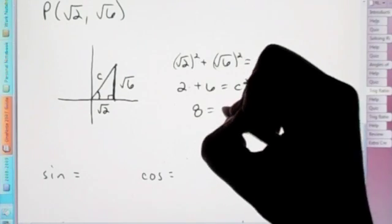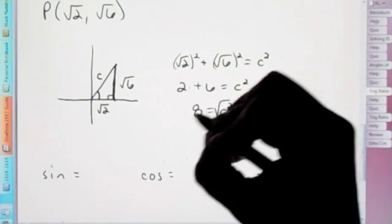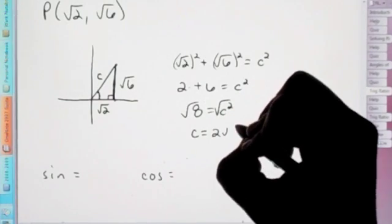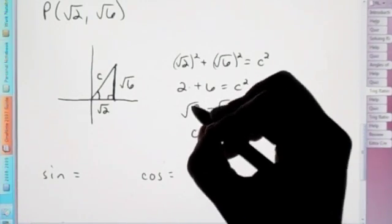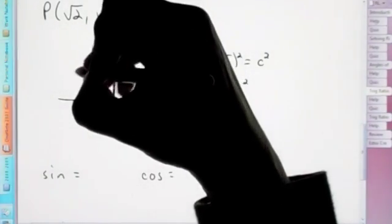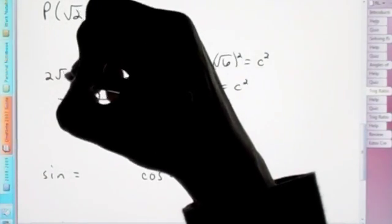That gives us 8. So when we take the square root, remember we could break down 8. c is going to be 2 root 2, because 8 is 4 times 2. So now that's our hypotenuse. So we have here 2 root 2.